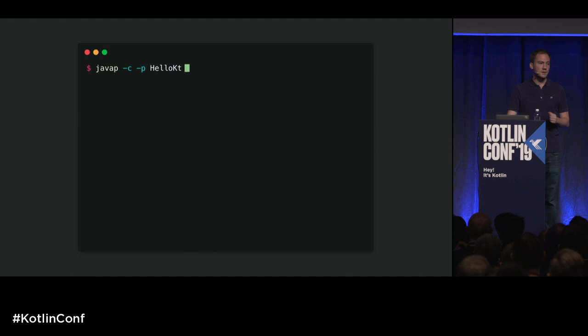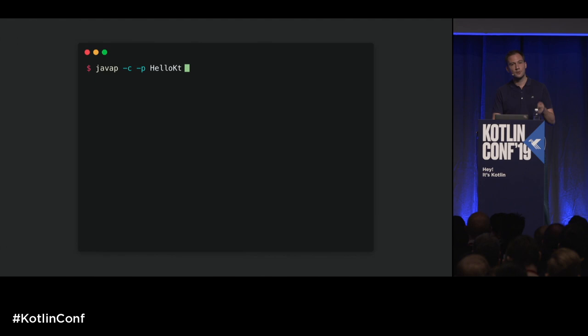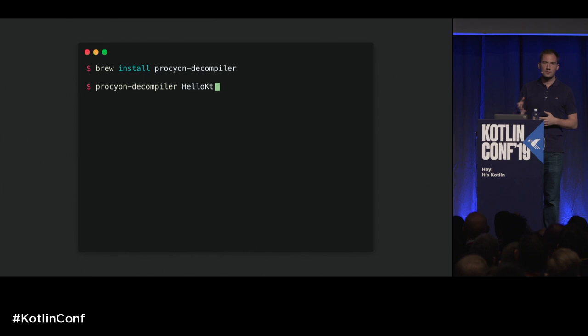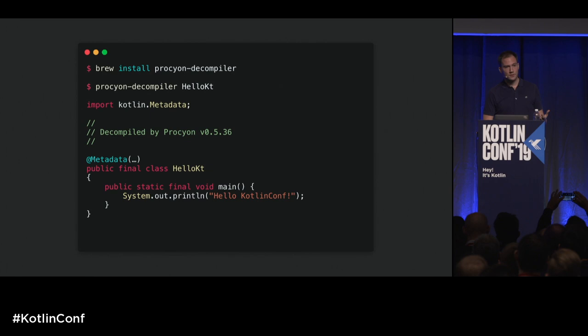The first one is called JavaP. It's part of the OpenJDK. You can pass a couple of flags: -c will decompile the code, and -p will make sure you see all the private methods and private fields. You list the classes you want to decompile and you get bytecode output for every method and class. Another tool I can recommend is called Procyon. If you are on macOS, you can use Homebrew to install that decompiler. When you invoke it on the command line — call procyon-decompiler and list your classes — you get not only Java source code, but it's even syntax-highlighted in the console, which makes the whole process much easier.